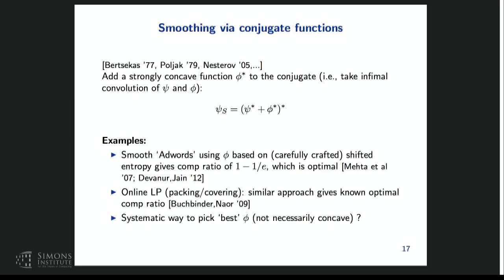For the AdWords problem, one can redo the existing literature as if they picked a phi and plugged it in. That phi turns out to be a shifted and scaled entropy function. When plugged into the algorithm, it gives the familiar multiplicative update algorithm with carefully chosen parameters, leading to the optimal 1/(1 - 1/e) competitive ratio for AdWords. For online LP packing and covering, similar approaches give the best known competitive ratios, due to Buchbinder and coauthors. AdWords is a special case of an online linear program.